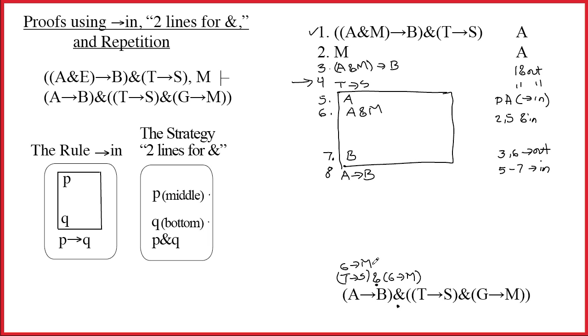Now it is my goal to prove G→M. So I'm going to make a box up above it. We know at the top of this box goes G, at the bottom of the box goes M. Line nine, PA for arrow in. And we're back up to the top doing everything that we can.